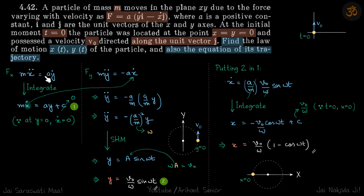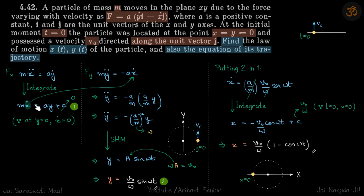Why do we integrate the y-equation and not the x-equation? When integrating the y-equation we get m·ẏ = -a·x + C, and at x=0, ẏ = v₀, which gives a value for the constant — making substitution trickier. But integrating the x-equation gives m·ẋ = a·y + C, and since when y=0, ẋ=0, C becomes zero, making substitution simpler.